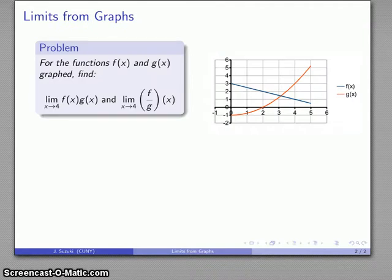So for example, I might have two functions f(x) and g(x) which are shown on the graph, and I can find the limit as x approaches 4 of the product and the limit as x approaches 4 of the quotient.